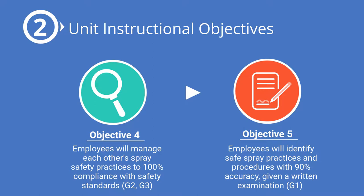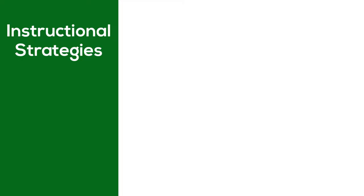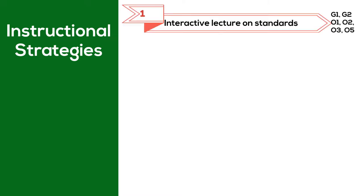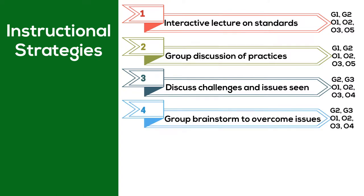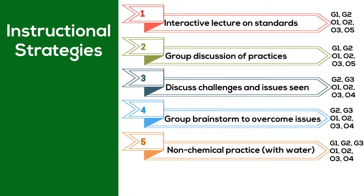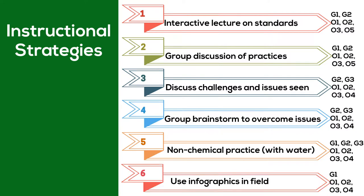Each objective is specific and measurable. A total of six instructional strategies were developed to achieve the respective learning objectives and instructional goals. Next to each strategy, you will see a series of letters and numbers — the G's represent the goal correspondence and the O's represent the objective alignment. The strategies are interactive lectures on standards, group discussions of practices, group discussion of challenges and issues seen in the field, group brainstorming to overcome issues, non-chemical practice spraying with water, and the use of infographics in the field.